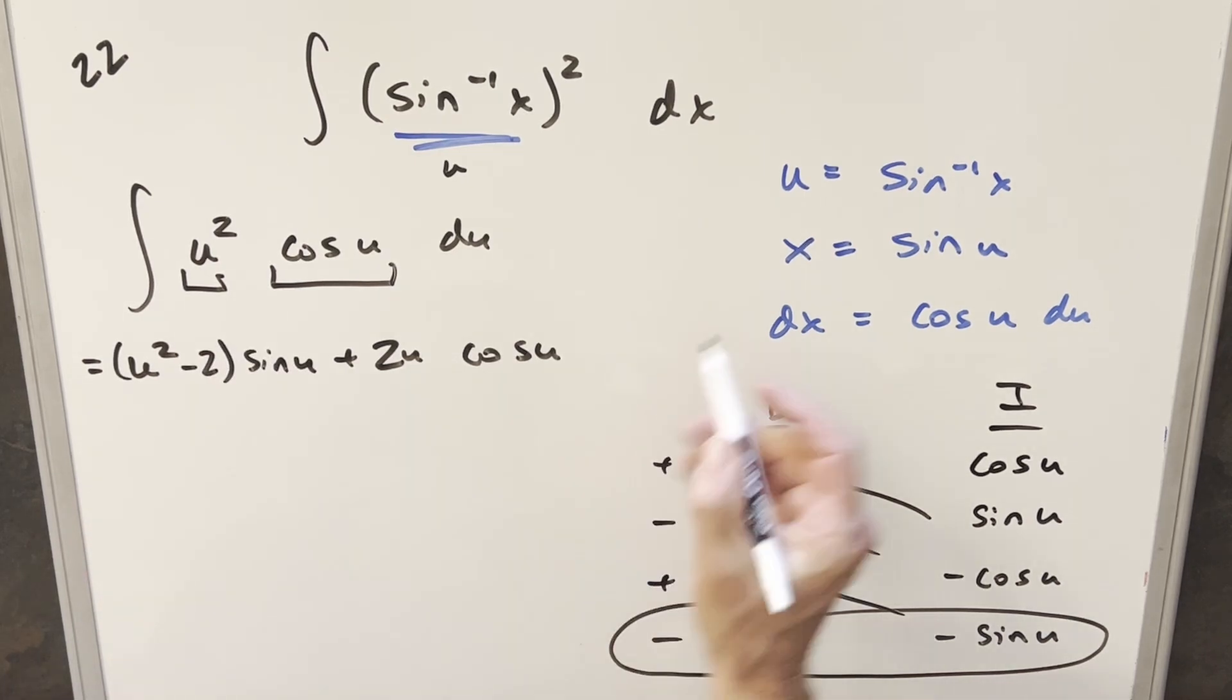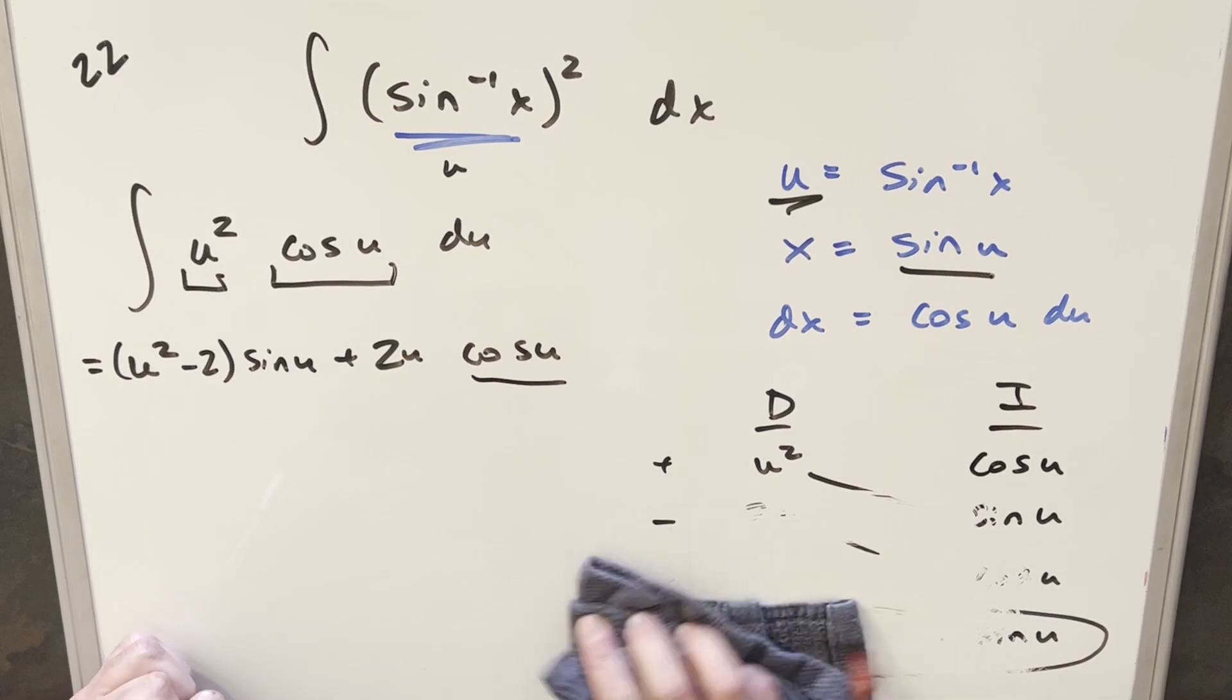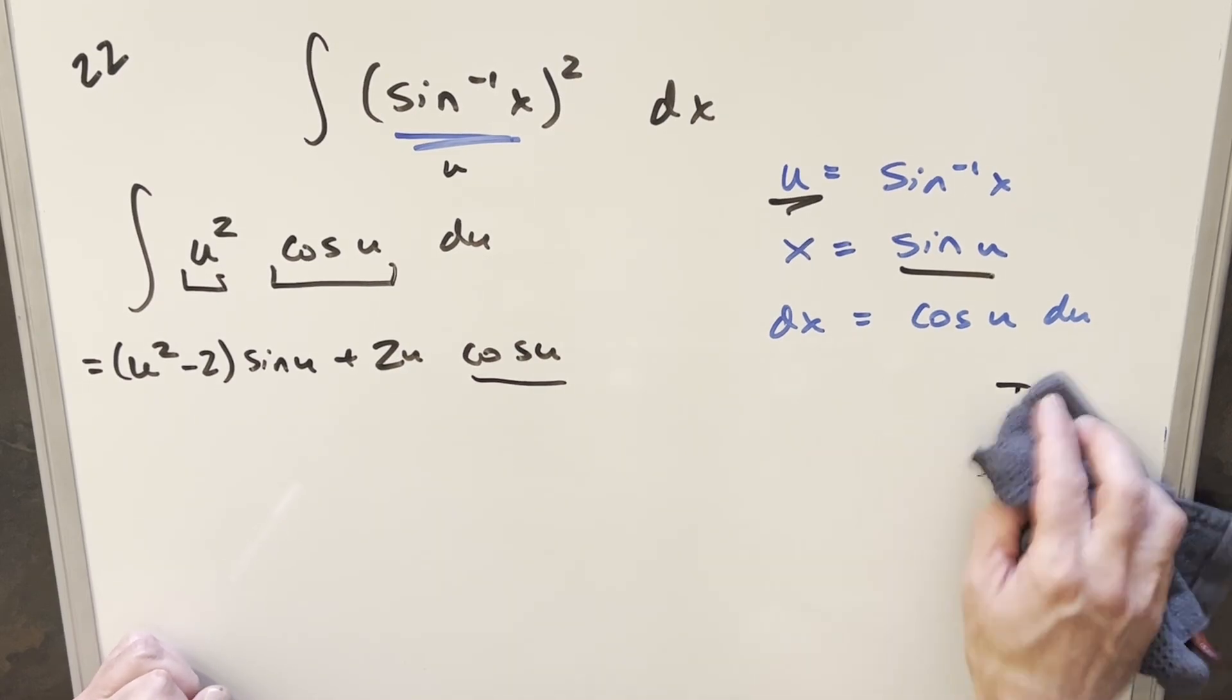And then we're almost ready to back substitute. We've got a value for u. We've got a value for sine u. But I want a value for cosine u. And so what I'm going to do for that is let's draw the triangle and get our cosine u value really quick.